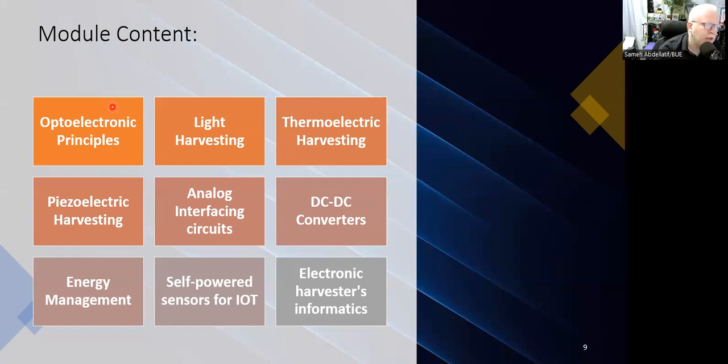Then, we will go to light harvesters, then thermoelectrical harvesters, then piezoelectric harvesters. After that, we will go to analog interfacing circuits, including the DC-DC converter. Then, we will go to energy management in principle. After that, we will have some complete prototypes for self-powered sensors for IoT applications. And finally, we will introduce the informatics term using some potential machine learning models.